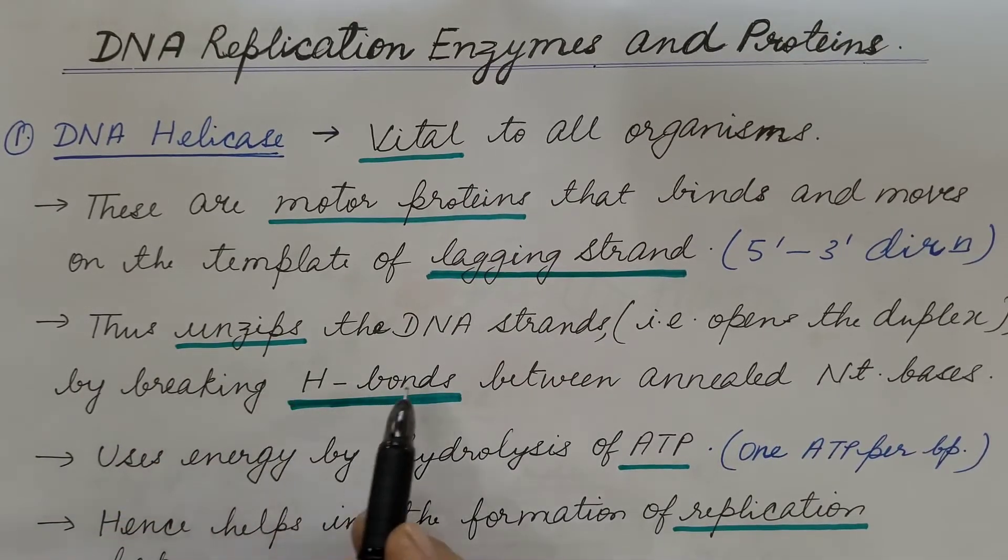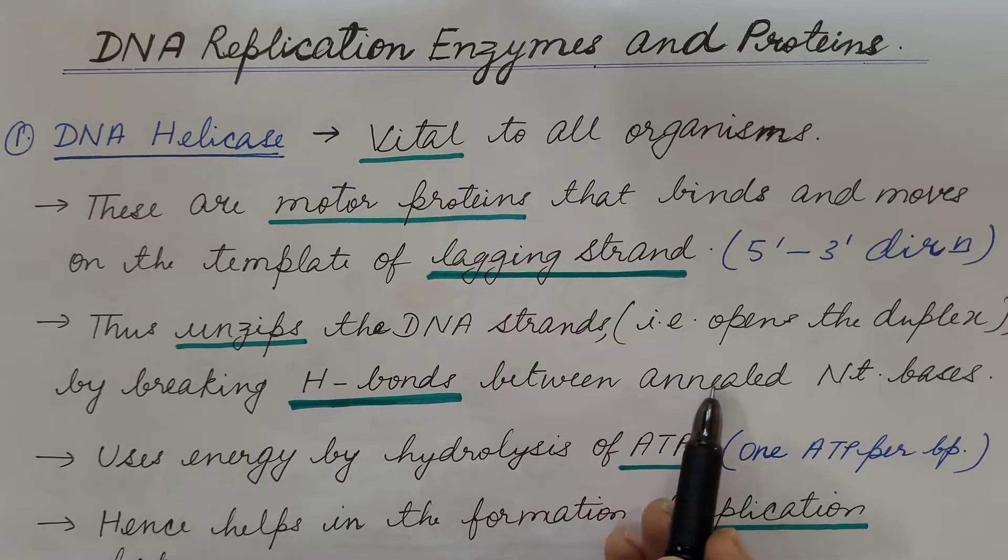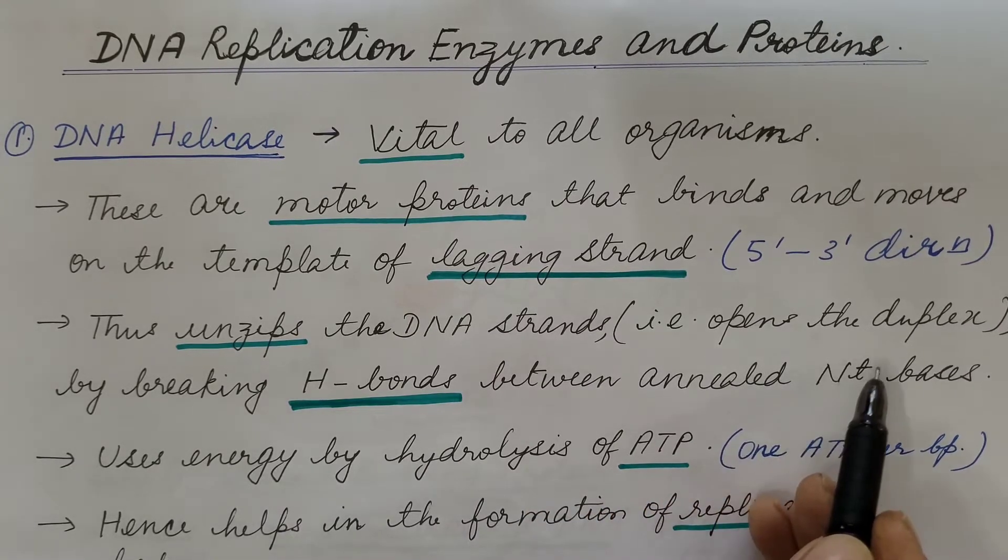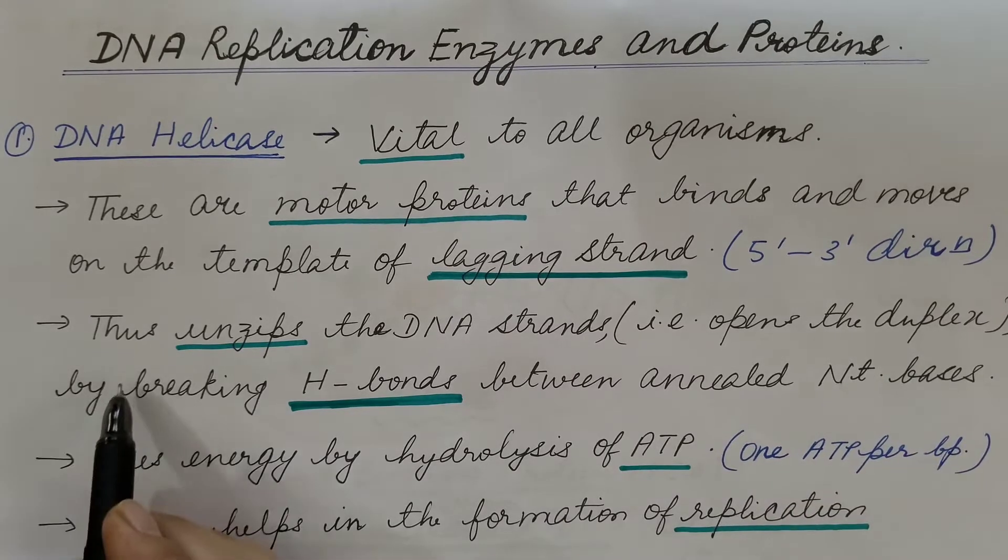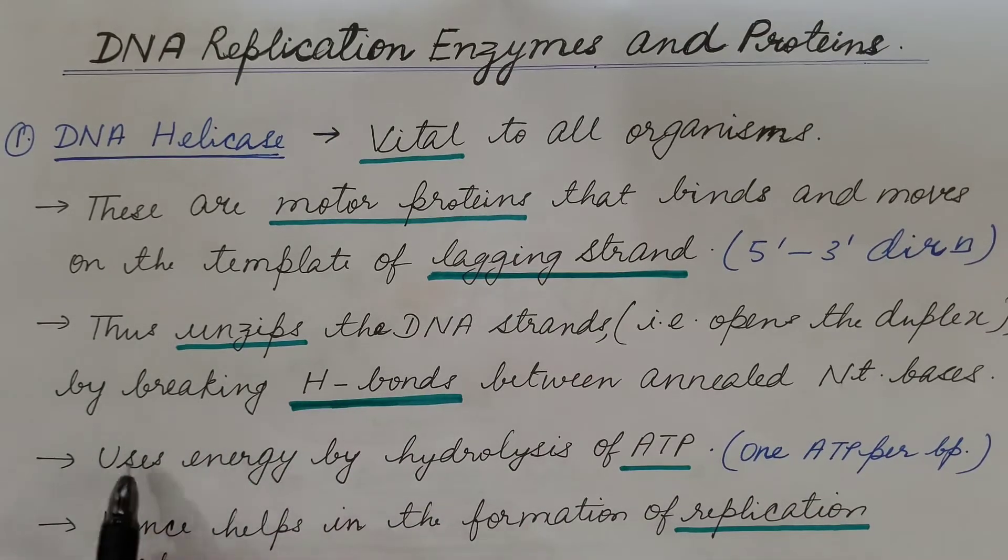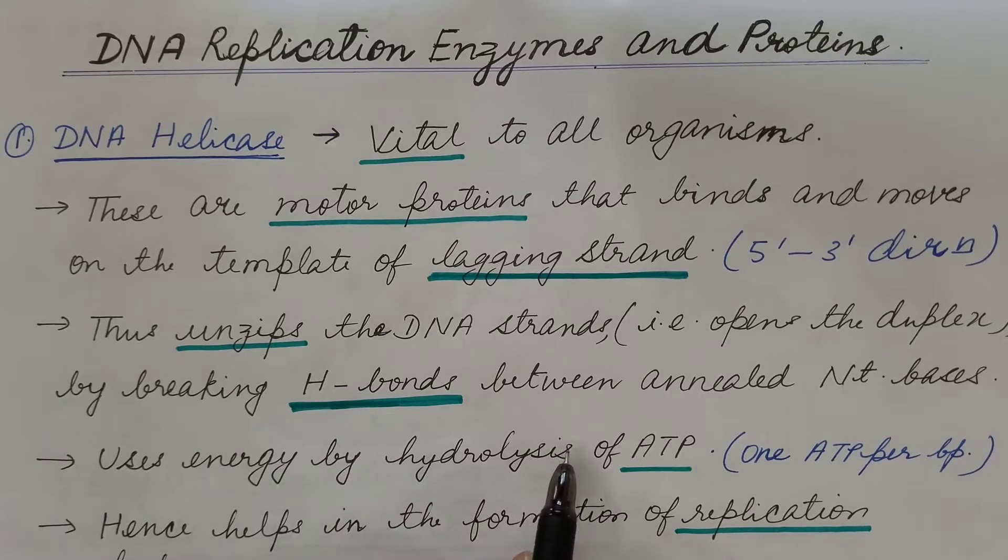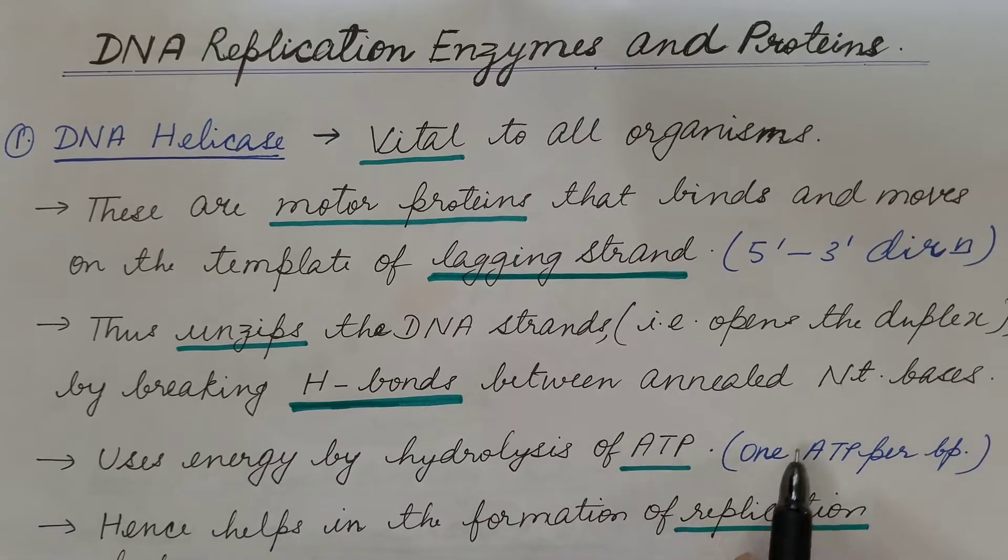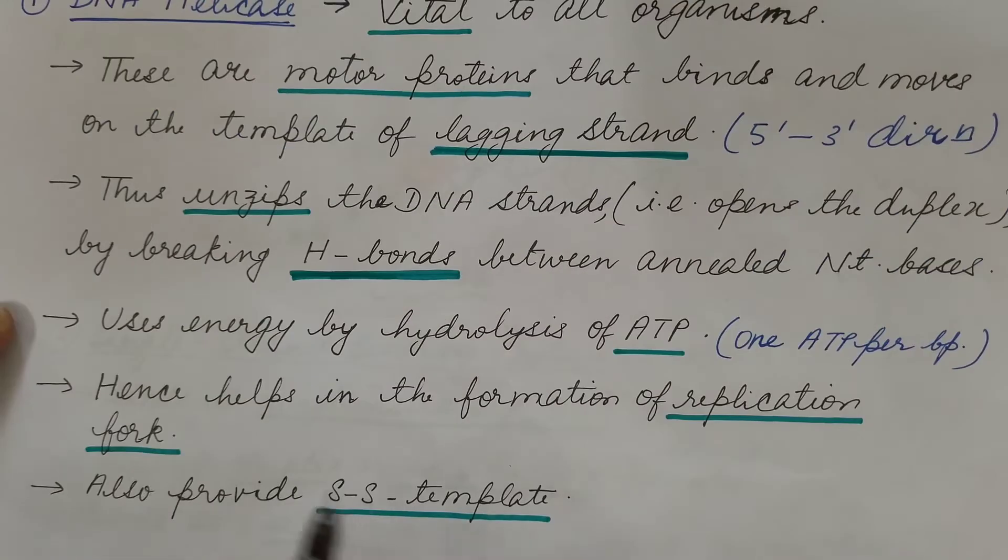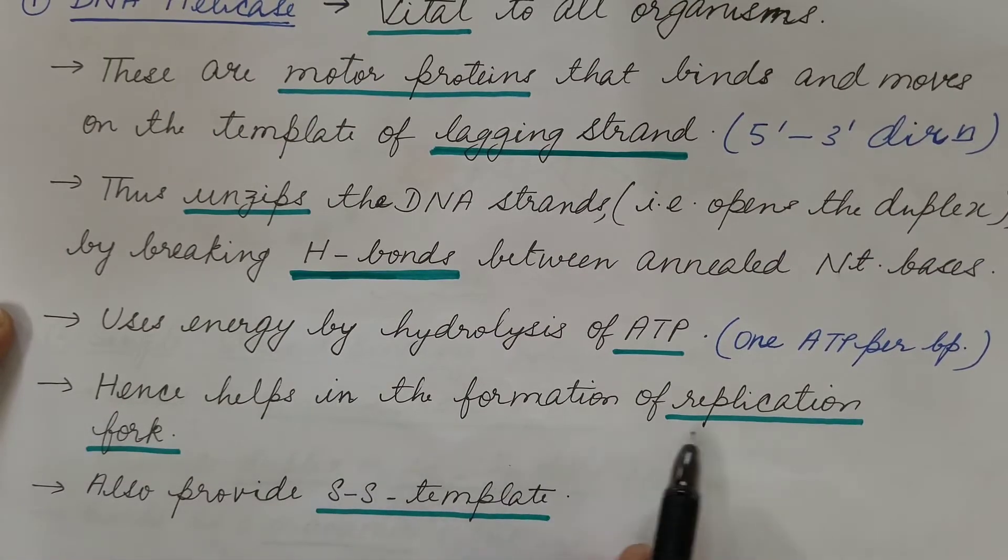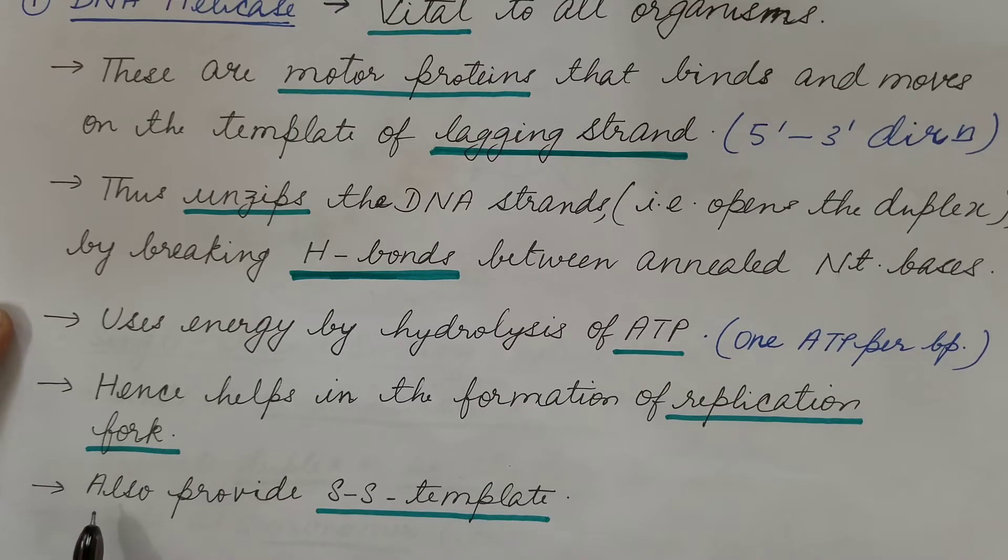This is done by breaking the hydrogen bonds between the annealed nucleotide bases or the complementary bases. In order to break this hydrogen bond, energy is required and it is obtained by the hydrolysis of ATP. One ATP per base pair is required. Hence it helps in the formation of the replication fork.